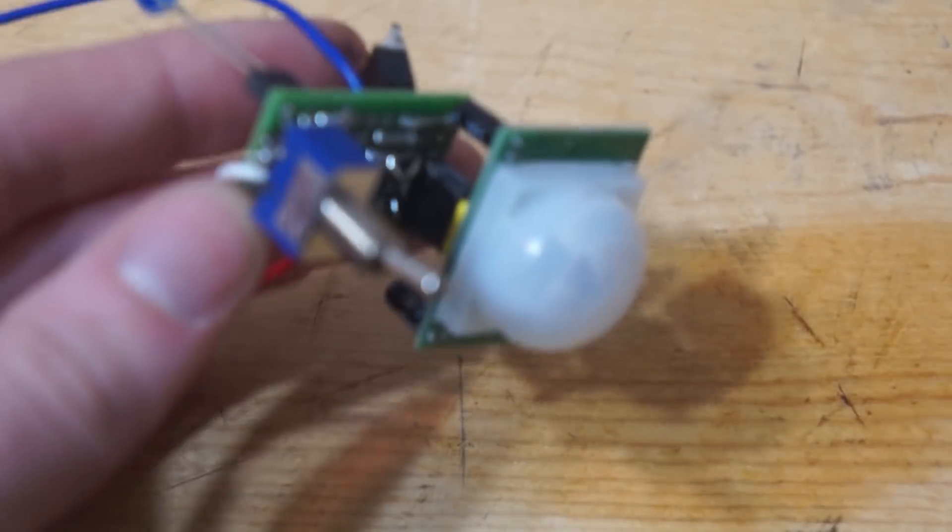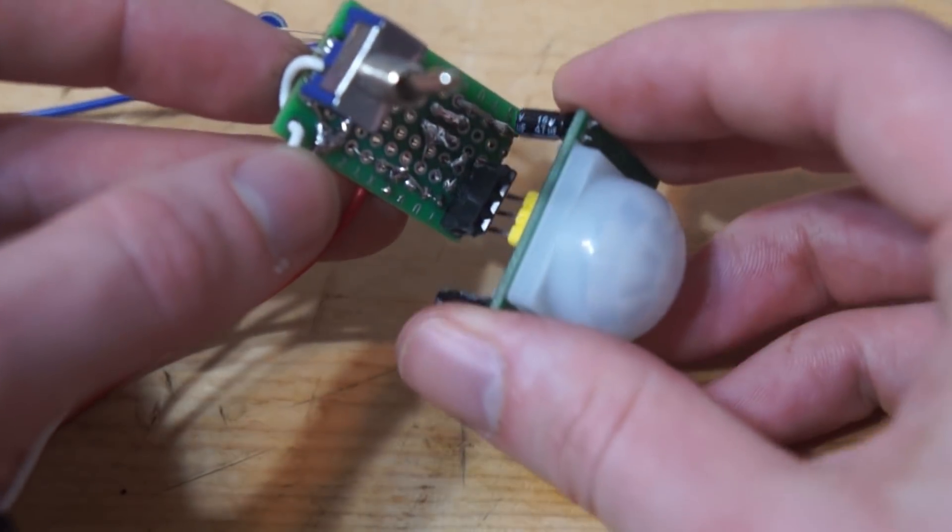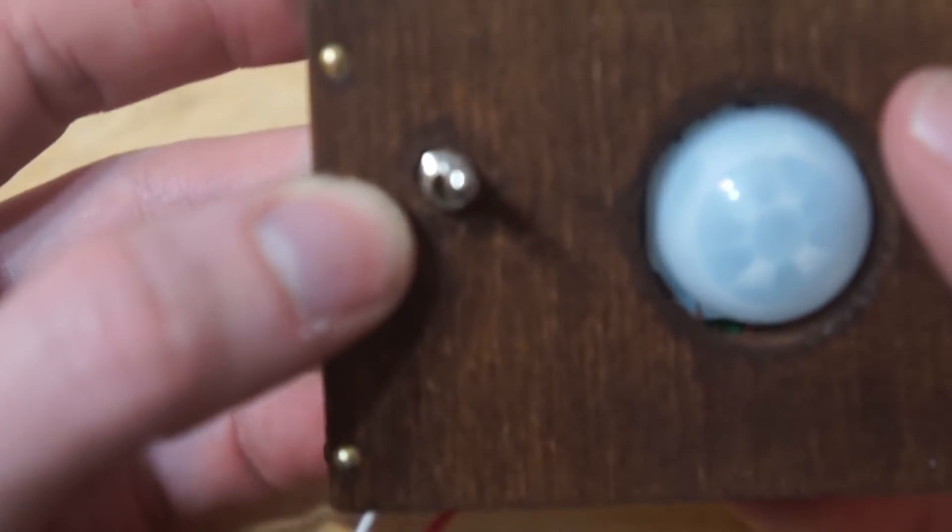Here it is after being stained. Now I'm going to take my circuit, I'm going to plug in my motion sensor module into the circuit, and I'm going to put it into my enclosure.